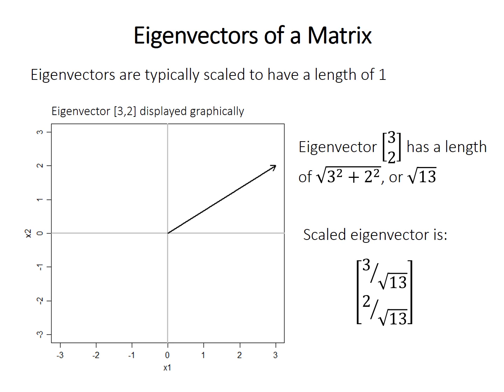One quick note: eigenvectors are typically scaled so they have a length of 1. The eigenvector [3, 2] has a length of square root of 13, so the scaled eigenvector is 3 over √13 and 2 over √13. This is a minor point, but it will explain later why the eigenvalues, which we'll talk about next, are not integers.